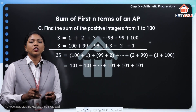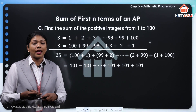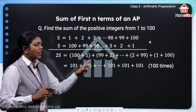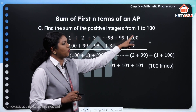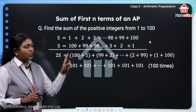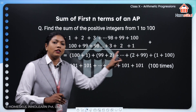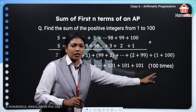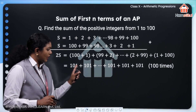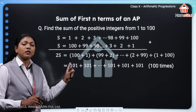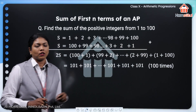How many such 101's are there? There are 100, because we are finding the sum of 1 to 100. So when you are adding them, we are getting 100 terms, and each of those terms is 101. We need to add it 100 times.